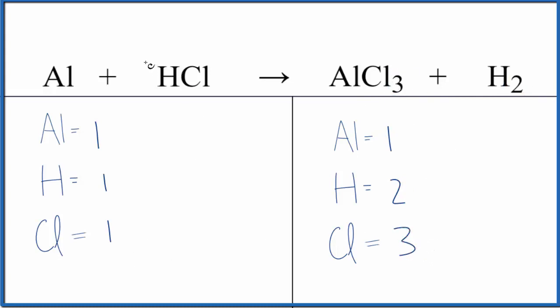We could put a three in front of the HCl, but then we'd have three hydrogens and two hydrogens over here. That would be difficult. I think what I'd like to do is get this to be an even number.